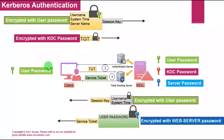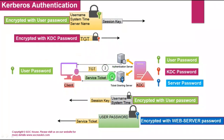Next, the client sends the session key and TGT to the Ticket Granting Server. The session ticket contains the username, system time, and server name, encrypted with the user password. The TGT ticket is the same one received in the previous step. The Ticket Granting Server decrypts the TGT with its KDC password, verifies it, and if it was generated by the KDC server, identifies the user.